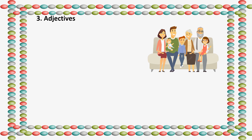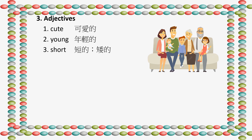Part 3: Adjectives. Number 1: Cute. 可爱的. Number 2: Young. 年轻的. Number 3: Short. 短的, 矮的.